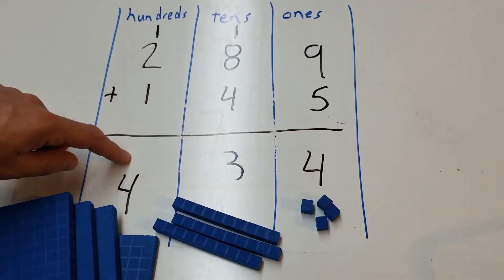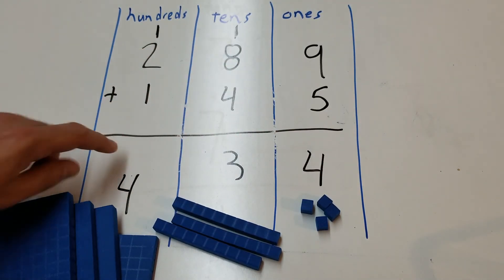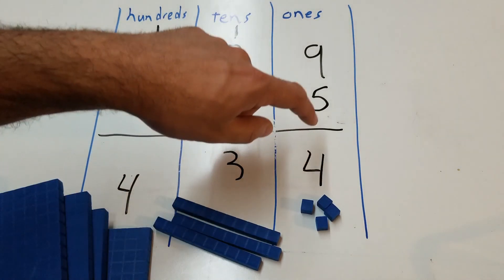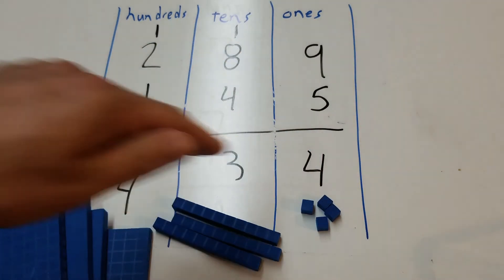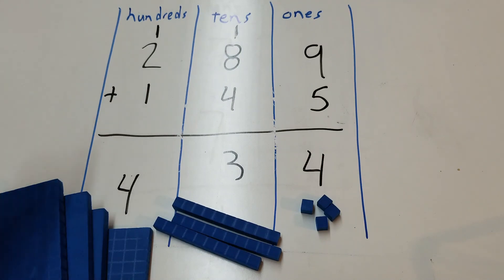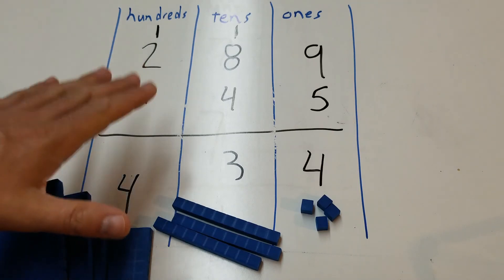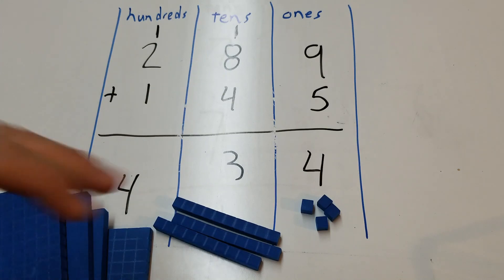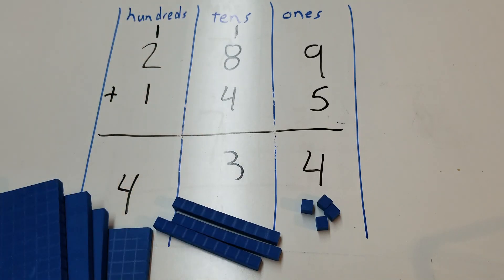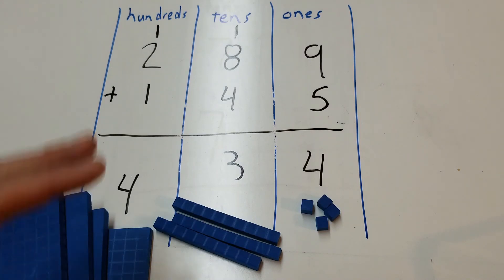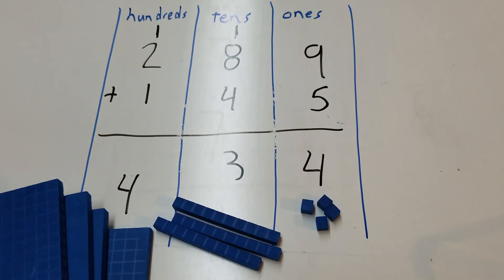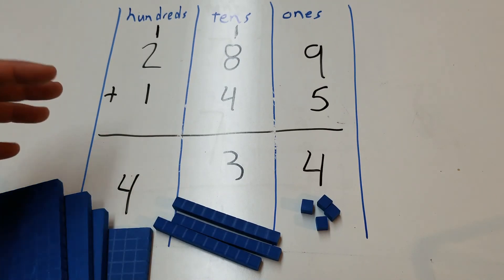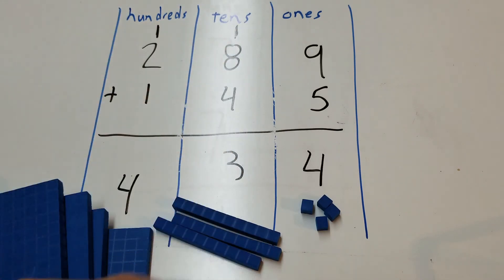Both of these digits are a four, but this four represents 400 and this four only represents four — there's a huge difference. They look the same on paper but their value is significantly different. I want you to practice this — use a board like this, use the base-10 blocks, use paper, whatever works best for you. Don't be afraid to use these tools. The goal is not to do this fast; the goal is to be accurate and to understand what's happening.